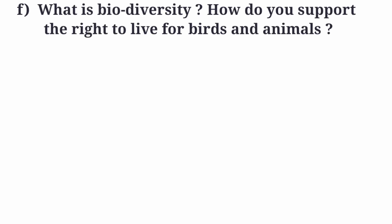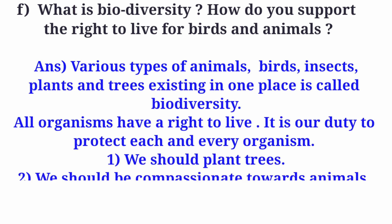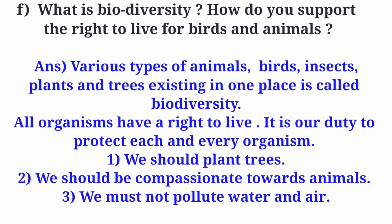Question F: What is biodiversity? How do you support the right to live for birds and animals? Answer. Various types of animals, birds, insects, plants and trees existing in one place is called biodiversity. All organisms have a right to live. It is our duty to protect each and every organism. We should plant trees, be compassionate towards animals, and must not pollute water and air.